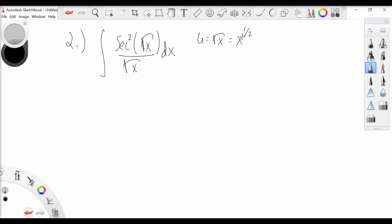Which is simply equal to x to the 1 half power. Then we can say that du is equal to 1 half x to the minus 1 half dx, and then we can rewrite dx as 2 divided by x to the minus 1 half du.